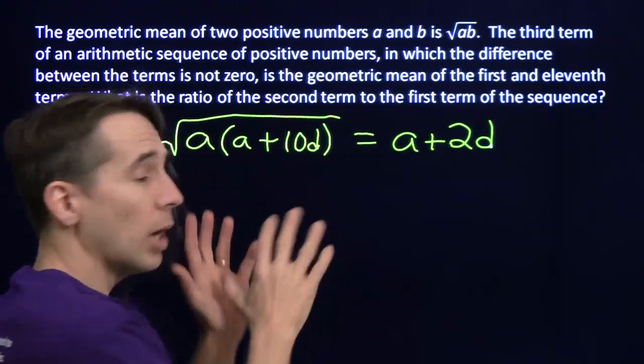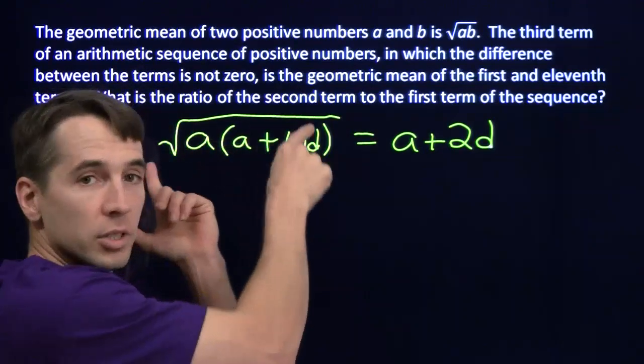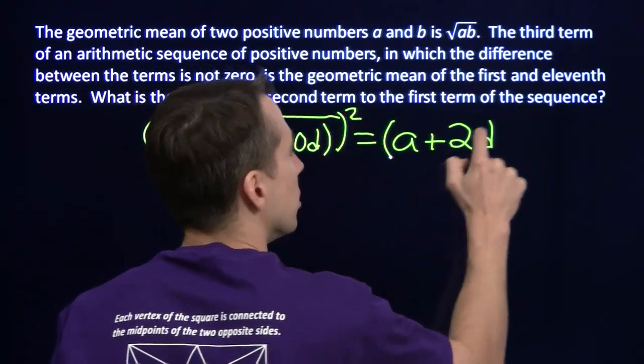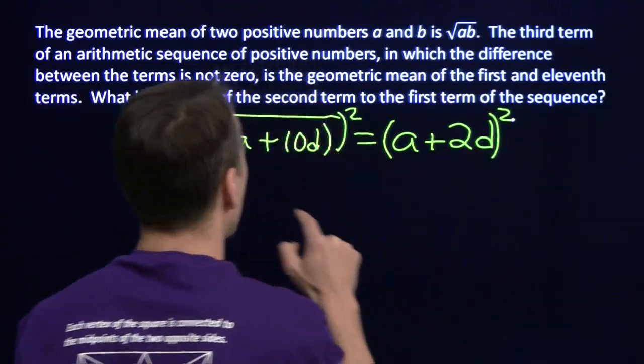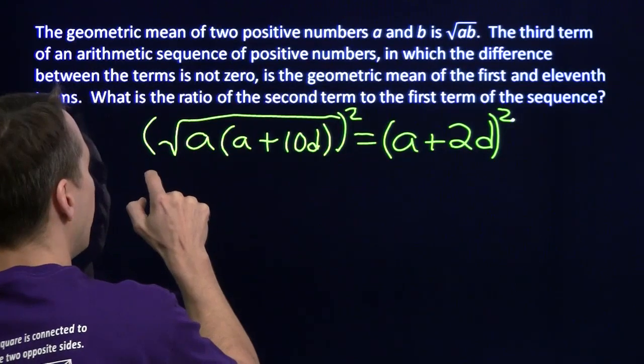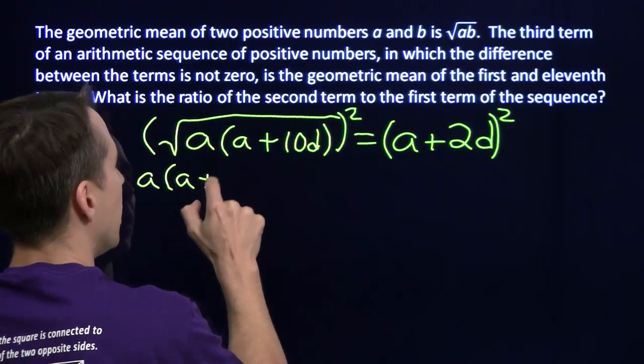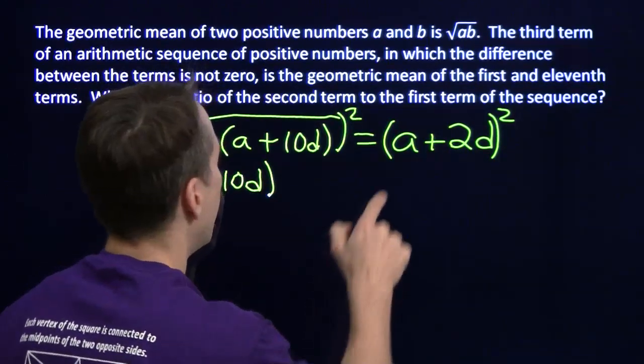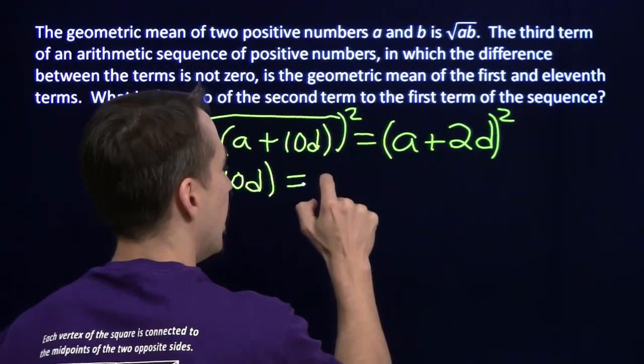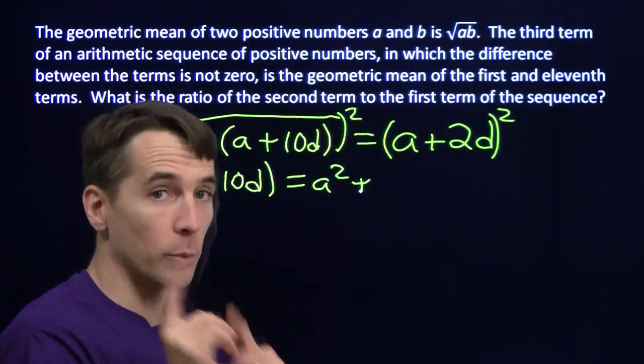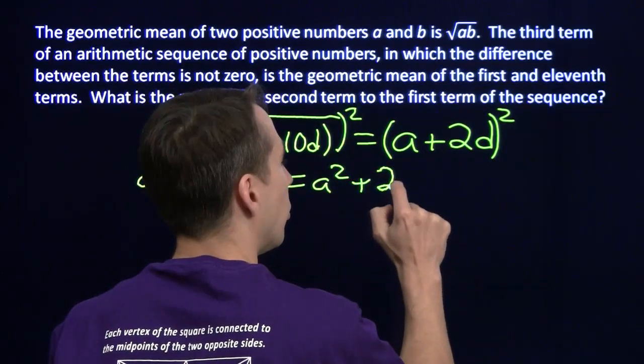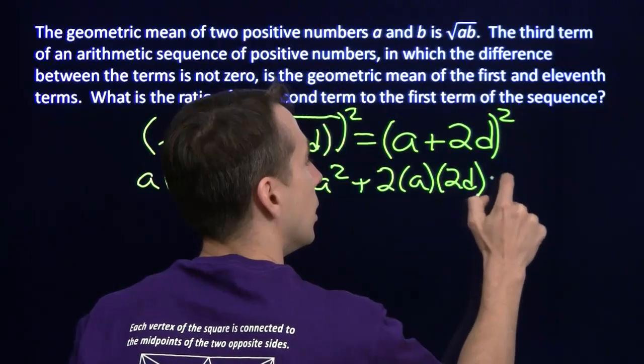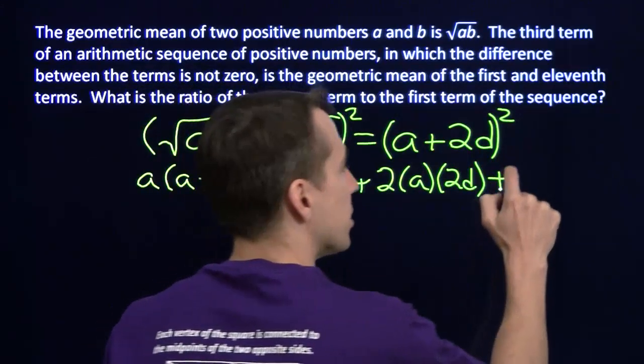Oh boy. Nasty square root there. What I'm going to do, I'm going to square both sides so I can get rid of this big square root here. If I square both sides, what's going to happen over here is I'm going to have A times A plus 10D. The square root will go away. And then over here, I'm going to have A squared. And then expanding this out, you have to remember that middle term like we did in an earlier Math Counts Mini. We have 2 times A times 2D. And then we have the square of the last term.